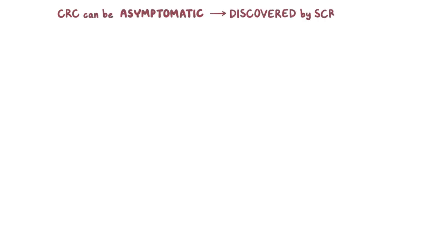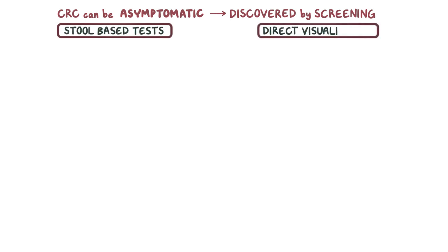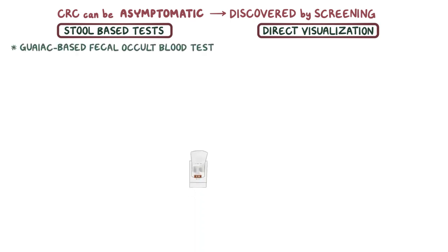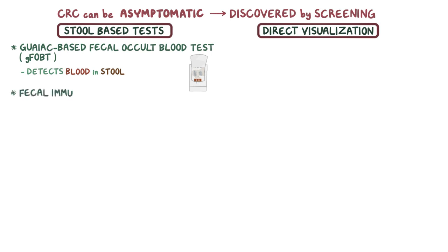Sometimes, especially early on, colorectal cancer is asymptomatic, and it's discovered by screening using either stool-based tests or direct visualization. One stool-based test is the GUIAC-based fecal occult blood test, or GFOBT, which detects blood in the stool. Another test is the fecal immunochemical test, or FIT.